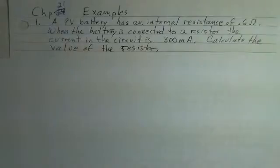Let's say we have a 9-volt battery that has an internal resistance of 0.6 ohms. When we connect the battery to a resistor, the current we find in the circuit is 300 milliamps. What's the value of that resistor?